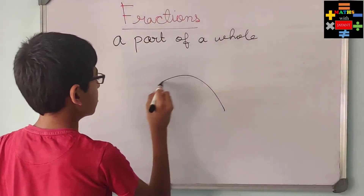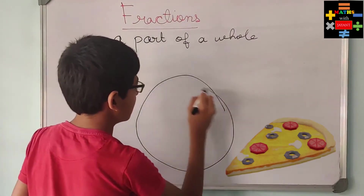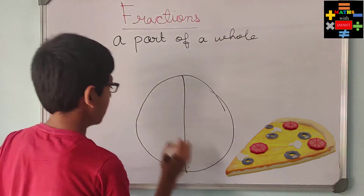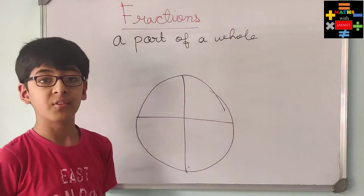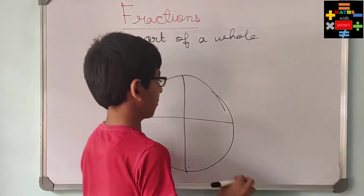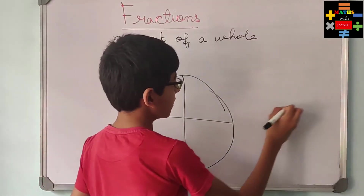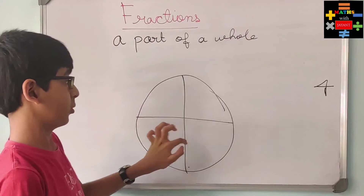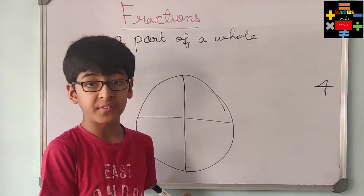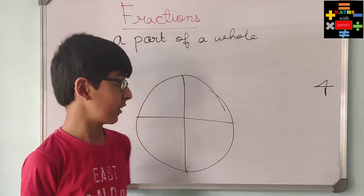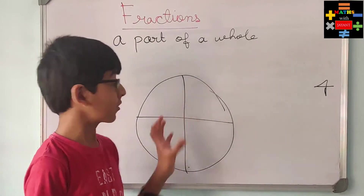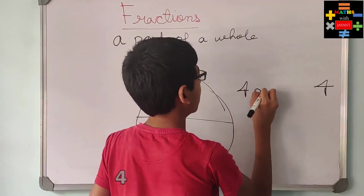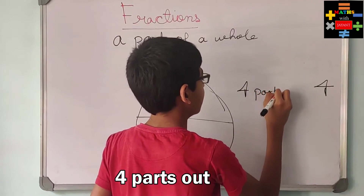Like suppose you have a pizza — I'm not able to make it fully circular — and there are four slices. The total is divided into four parts: one, two, three, four. Right now all four parts are with me, nothing is missing. So right now I have all four parts out of four.